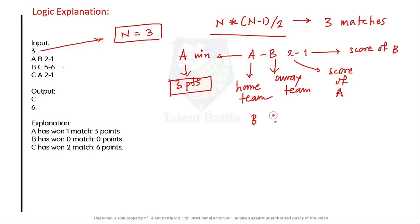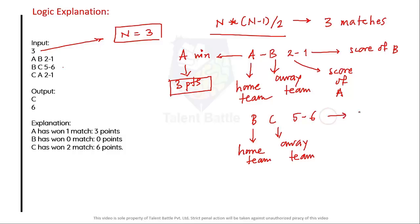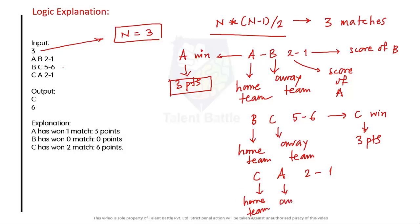Third input 'C A 2-1': C is home, A is away. C scored 2 and A scored 1, so C wins again and gets three points. After all three inputs, team A has 3 points from their one win, team B has 0 points from zero wins, and team C has 6 points from two wins.